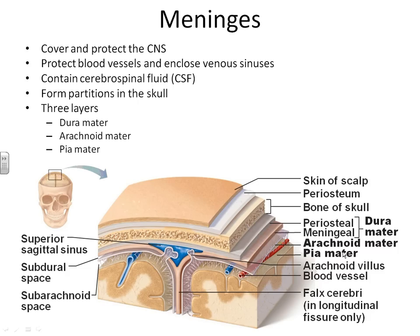Below the dura mater is the arachnoid mater. From its name, you can tell it's going to have a spiderweb look to it. You have a real thin, clear layer, and then below that, all of these little spiderweb-type projections — that is the arachnoid mater. In the subarachnoid space, below this thin layer and within the spiderweb-looking structures, that's where we find our cerebrospinal fluid and various blood vessels, and where the blood-brain barrier comes into play. Below the arachnoid mater is the pia mater — a very thin, delicate membrane that lies directly on top of the cerebrum, surrounding a gyrus and even dipping down into the sulcus of the cerebrum.